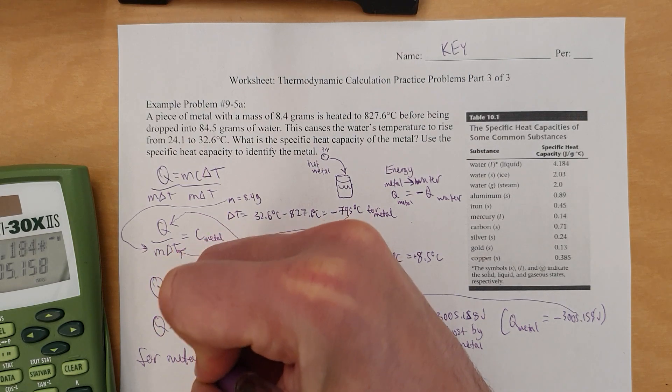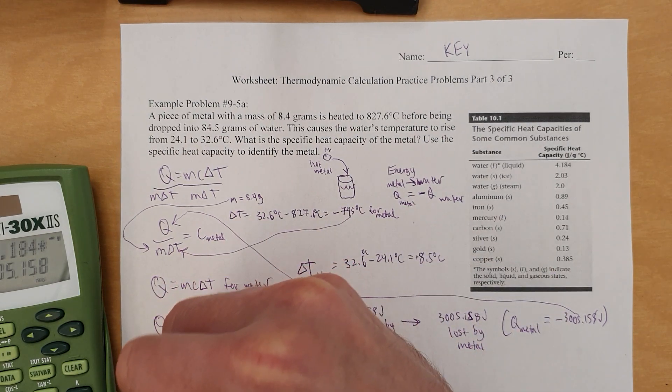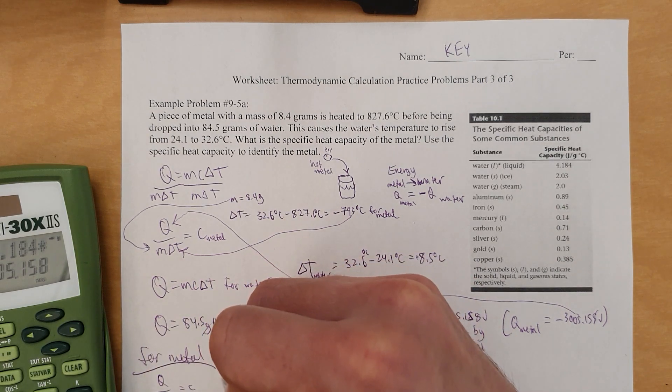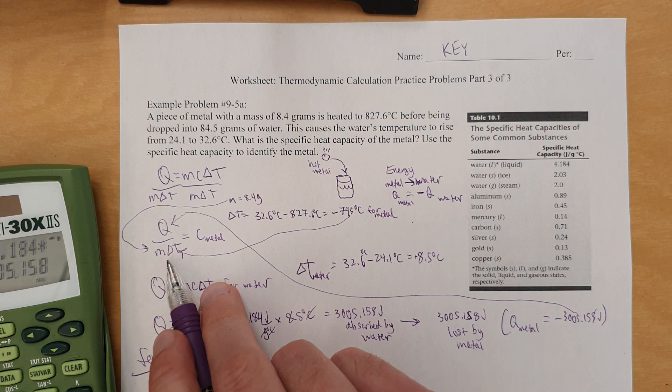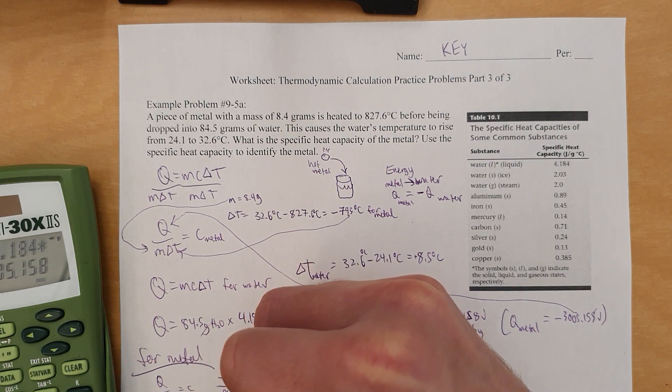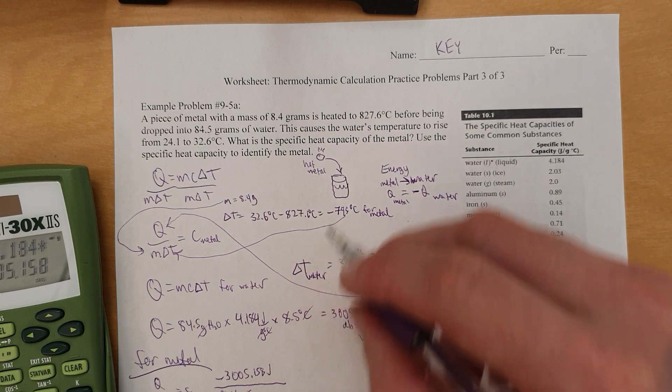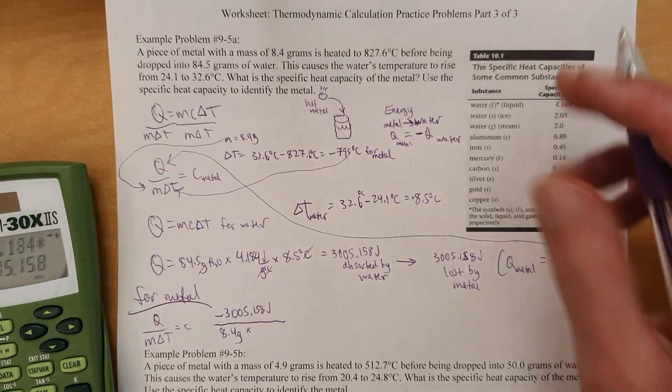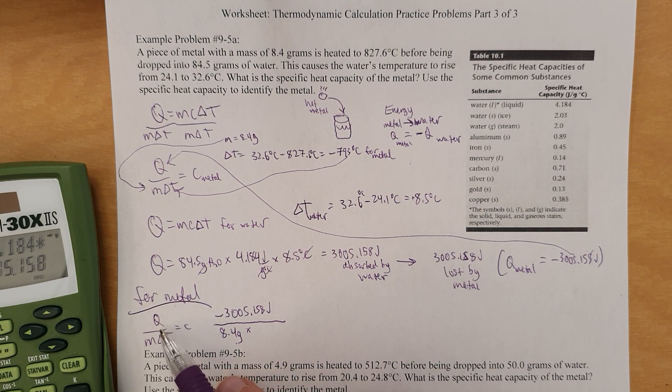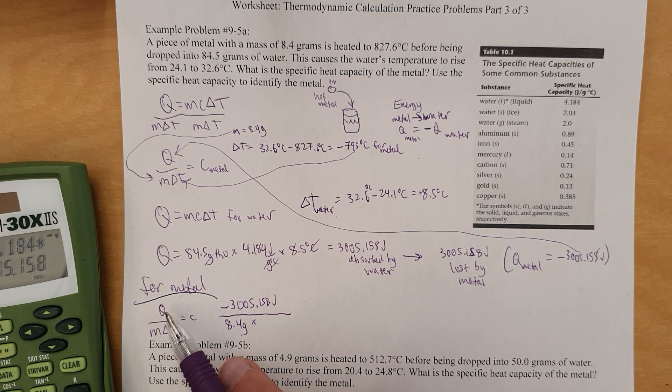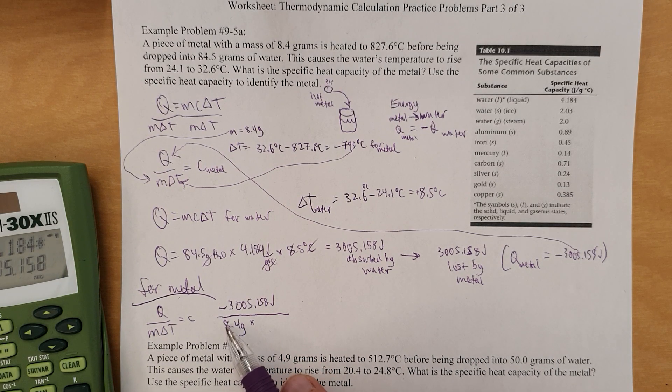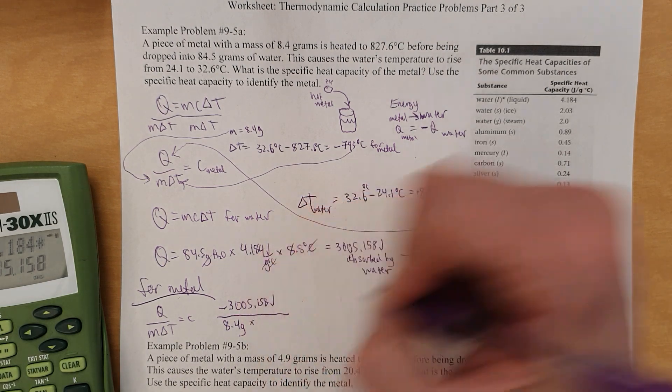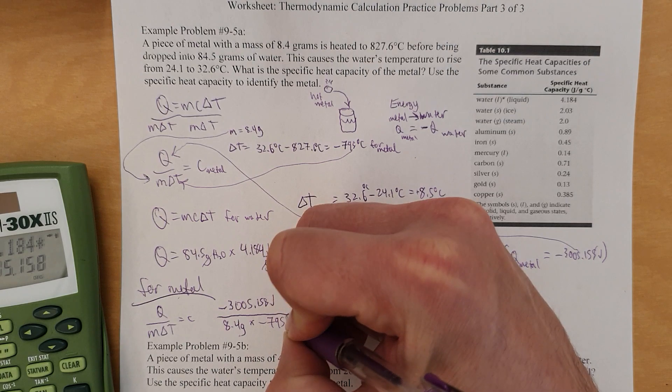So, for metal, Q over M delta T equals C. So, then negative 3,005.158 joules over the mass, which is 8.4 grams times the delta T, which is negative 795. Sorry, I just realized that whole thing was out of view. So, okay, so let me just recap. I just realized that was out of view for metal. The formula is that, which means we plug in the numbers. Q equals negative 3,005. M equals 8.4 grams. Delta T equals, let's see, negative 795 degrees Celsius, as shown up there.